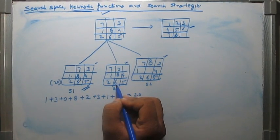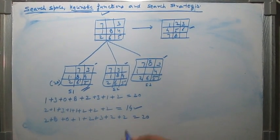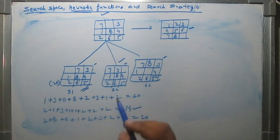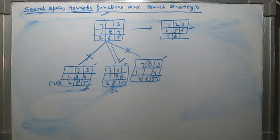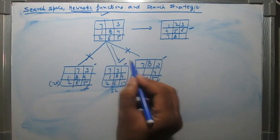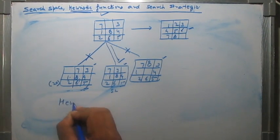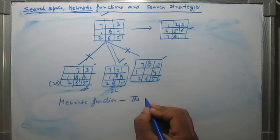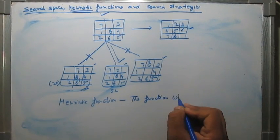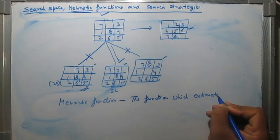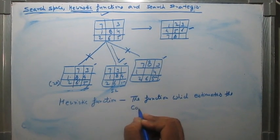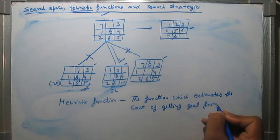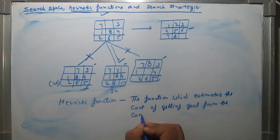Similarly, we can calculate the distance of state 2 from the goal. Here we can see that state 2 is most promising because the cost of getting to the goal from this state is the least. So we select state 2 to move from. Using the heuristic function, we can avoid unnecessary search. We can define the heuristic function as the function which estimates the cost of getting to the goal from the current state.